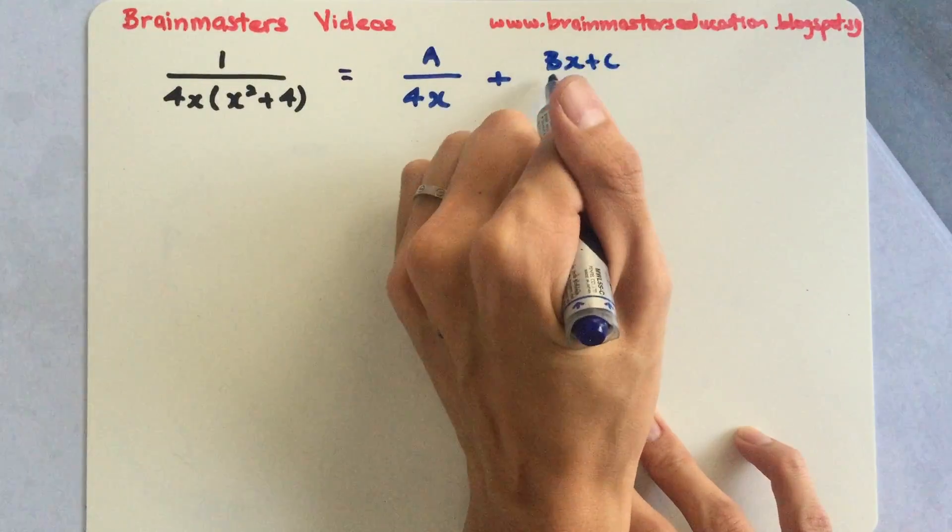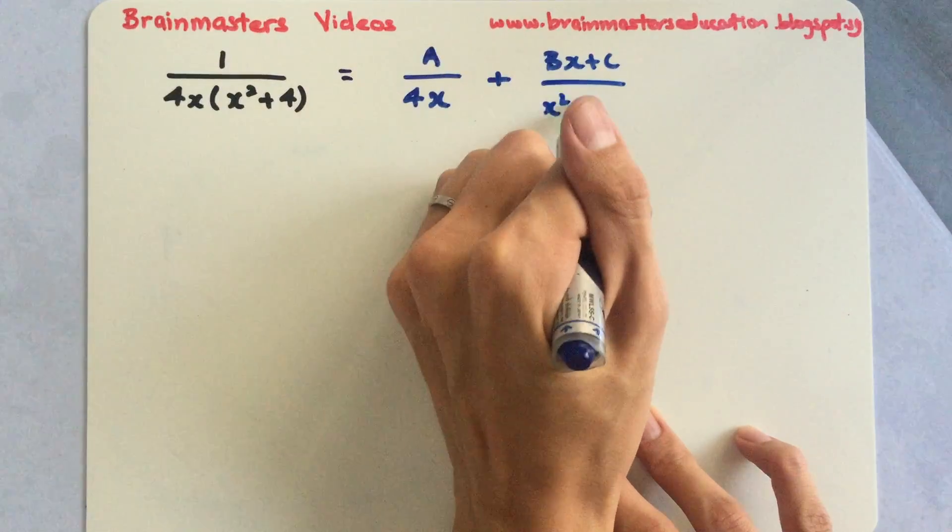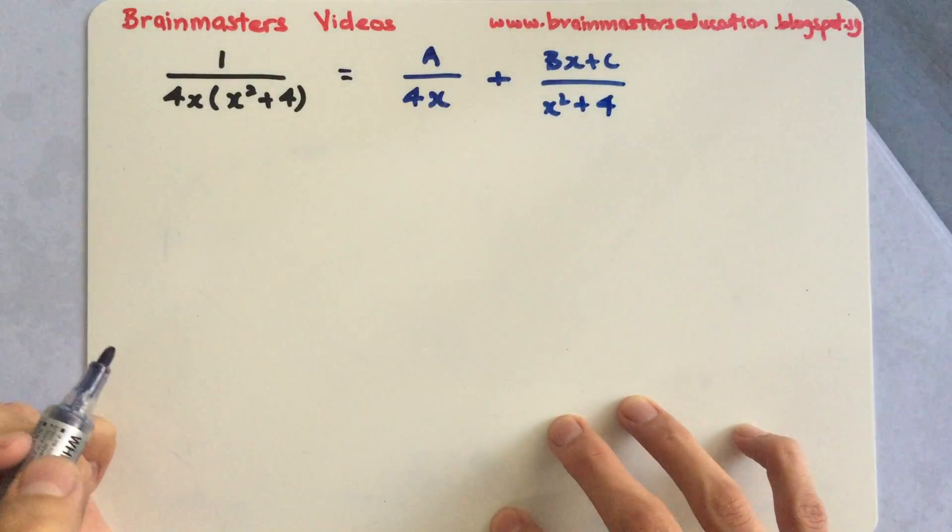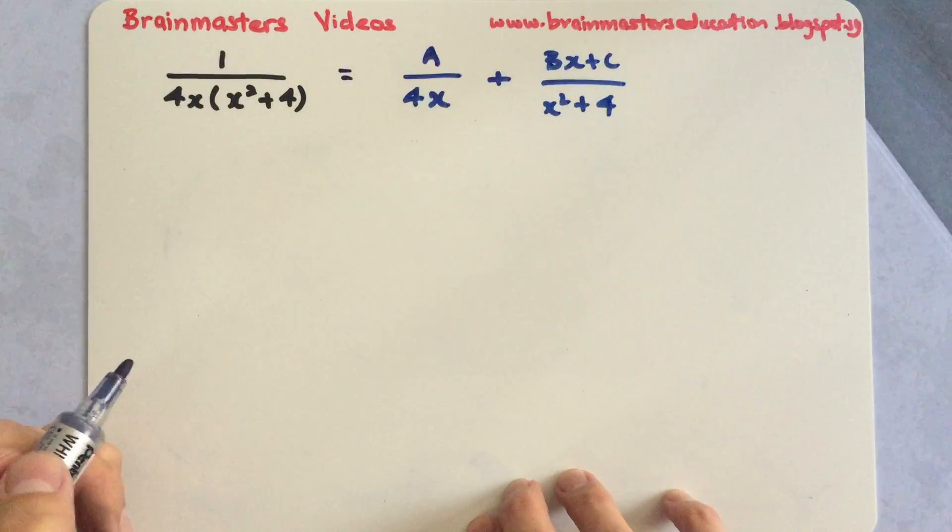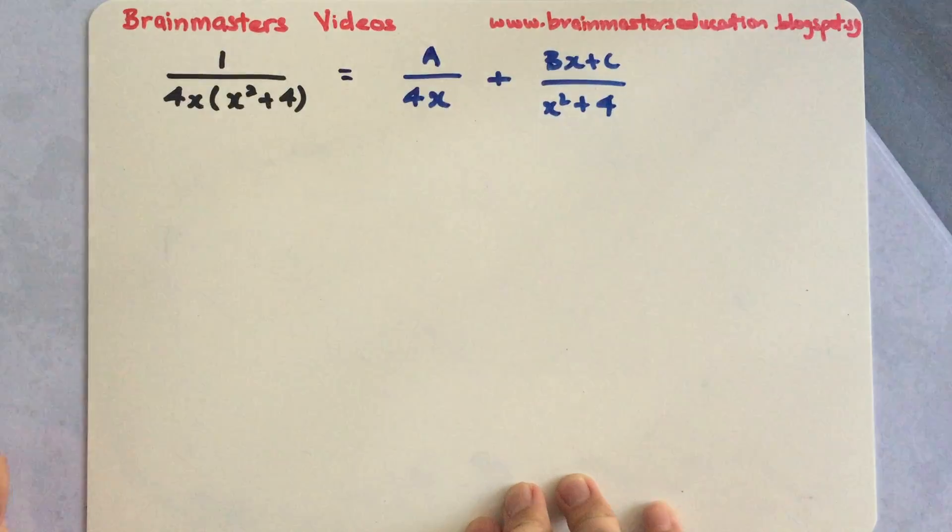plus Bx plus C over x squared plus 4. If you refer to our identifying type, you will be able to know how to separate them into 2.